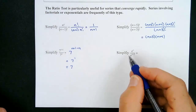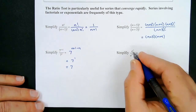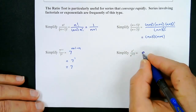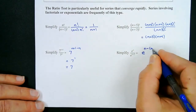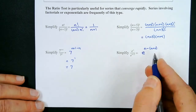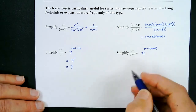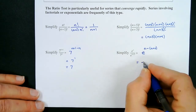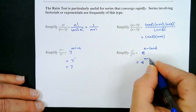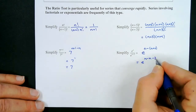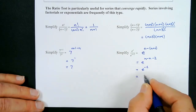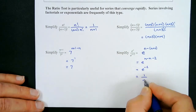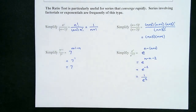For base e: e^n divided by e^(n+2) becomes e^(n minus (n+2)), which is e^(n − n − 2), or e^(−2), which means 1 over e squared. So we're going to need this type of simplifying when we go to do the ratio test.